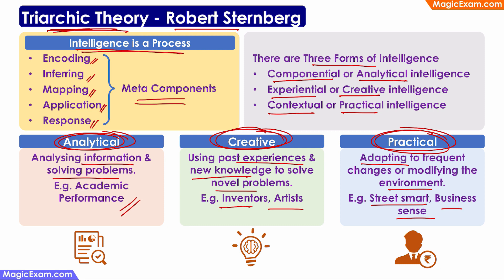If you remember, we previously learned about three steps in intelligence: first is learning, then the ability to identify problems, and then to solve the problems. Looking at these meta-components, the first three — encoding information, inferring the information, and mapping it into a schema — are essentially learning, converting it into useful knowledge. Then you are identifying a problem and deciding which knowledge needs to be applied.